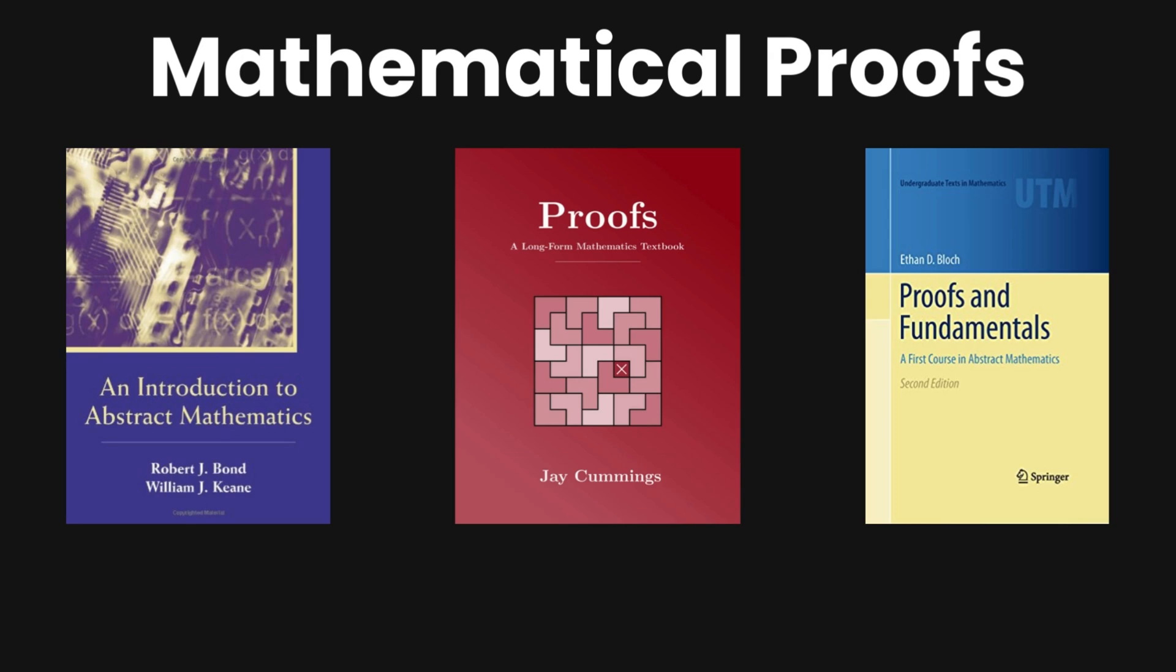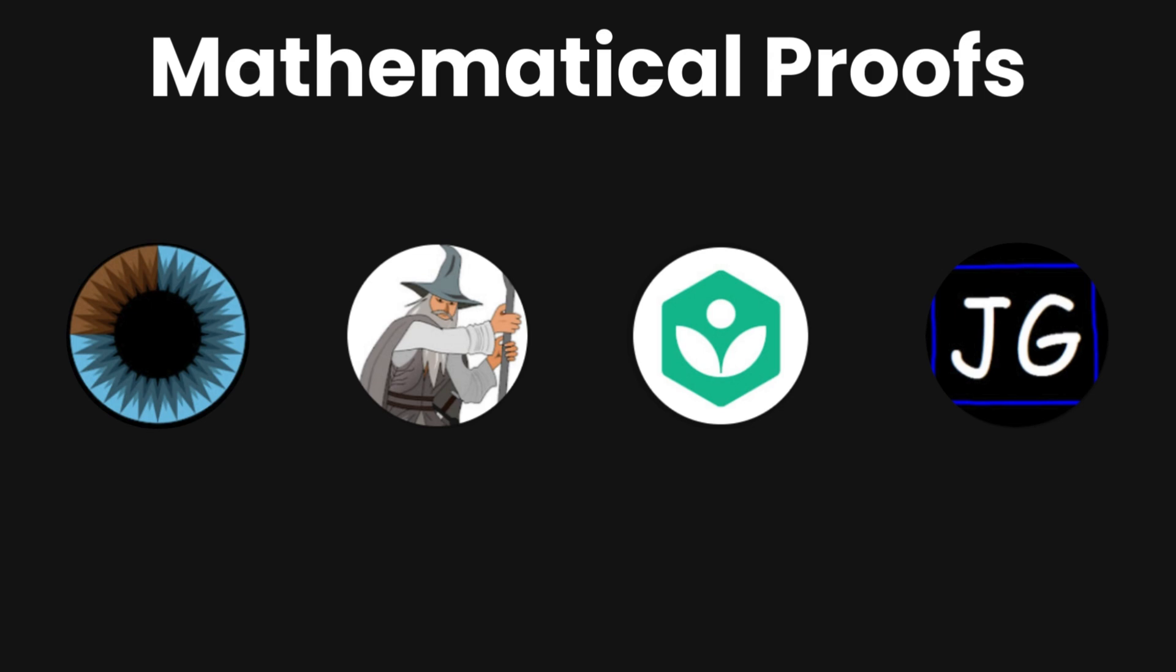It's the best book about proofs that I have found. And then you have An Introduction to Abstract Mathematics by Robert J. Bond and William J. Keane. And then you have Proofs and Fundamentals, a first course in abstract mathematics by Ethan D. Bloch. Those are also two other good books on mathematical proofs. You can still find great resources on YouTube. There's a little bit less resources on mathematical proofs, so you'll have to study and read books. But you still can find.